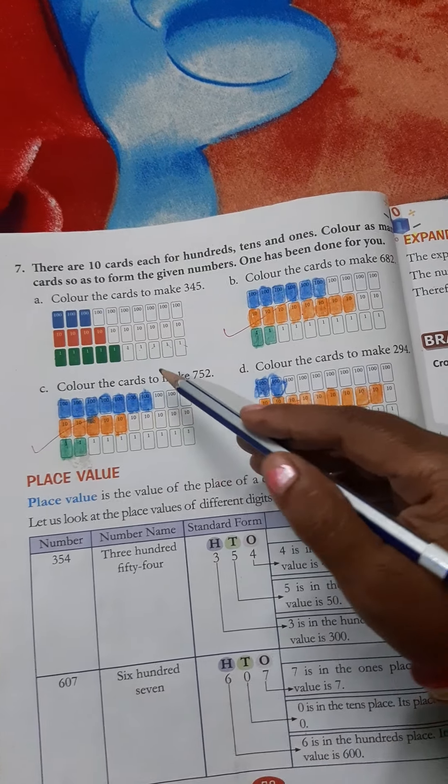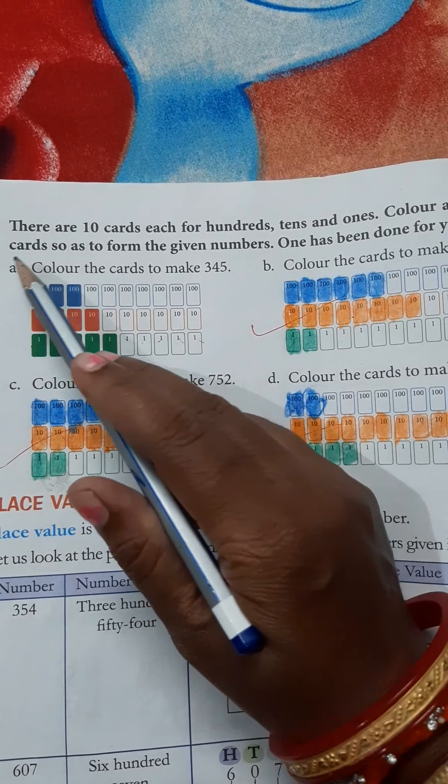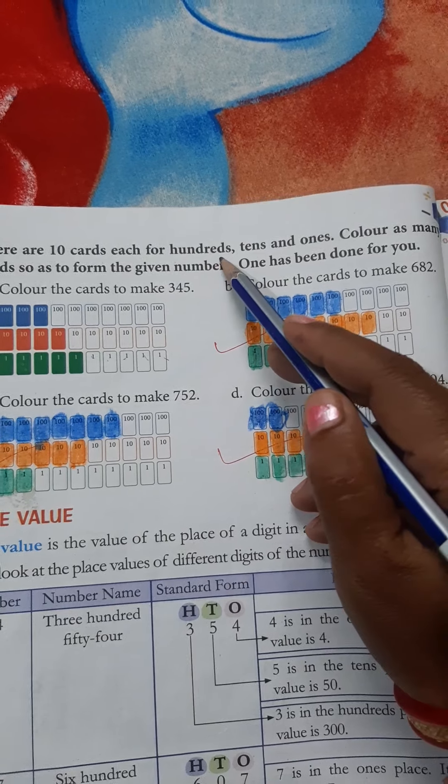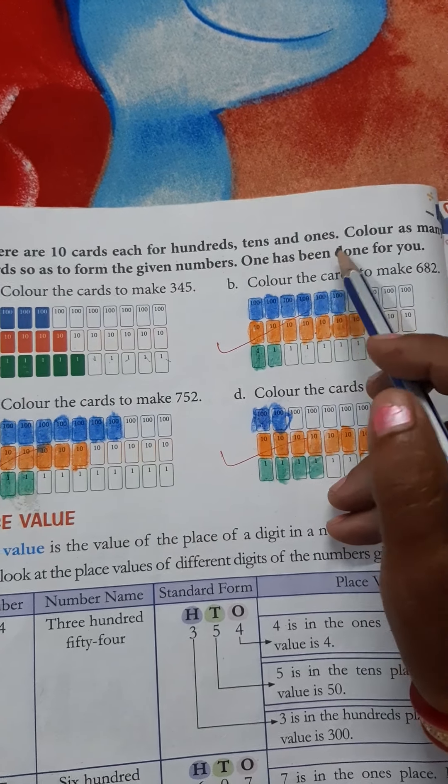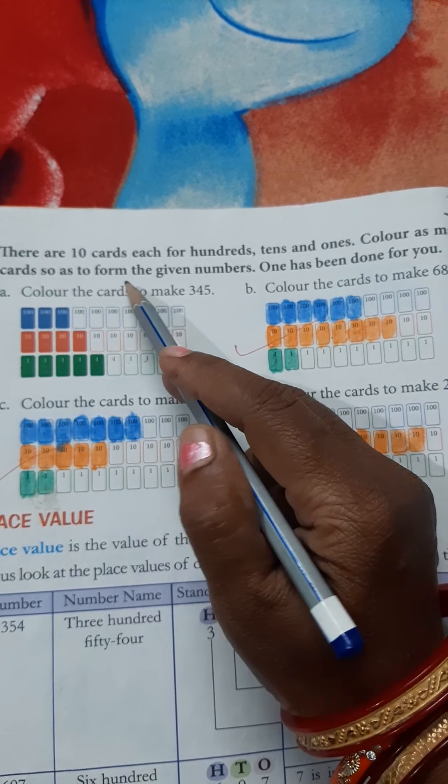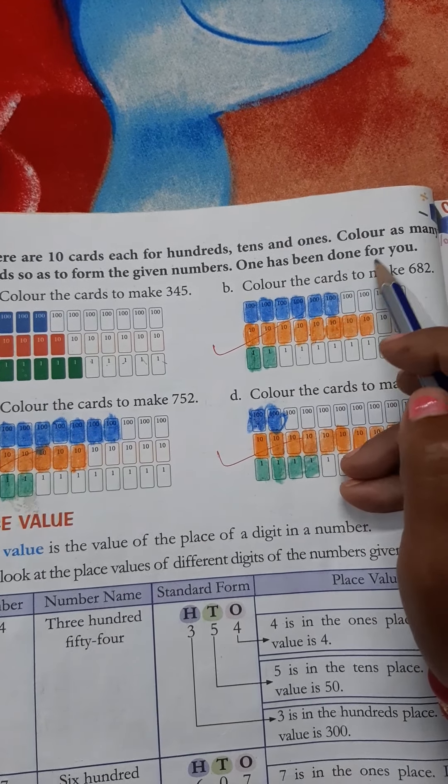Hello students, open your math book, page number 58, number 7. There are 10 cards each for hundreds, tens and ones. Color as many cards to form the given numbers. One has been done for you.